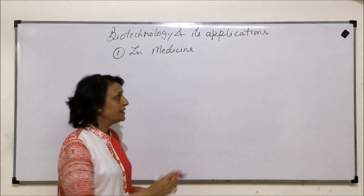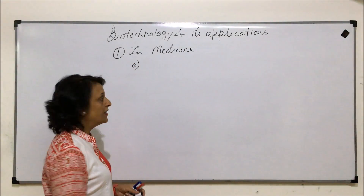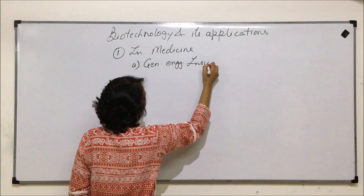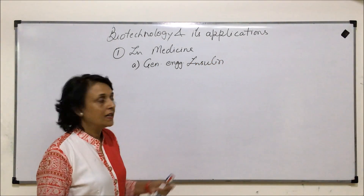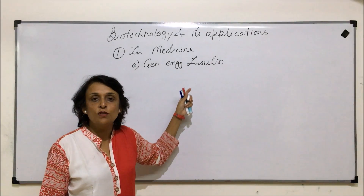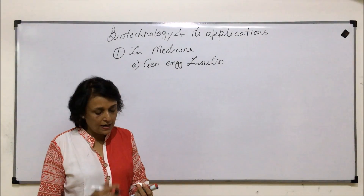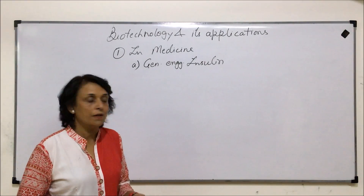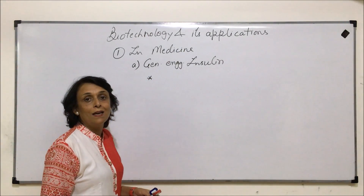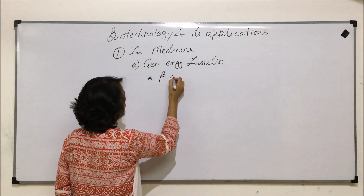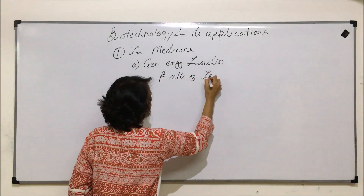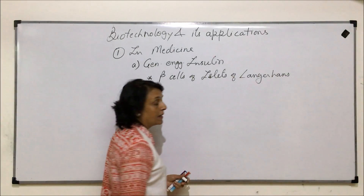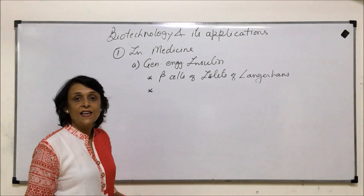When we say applications in medicine, there are many things. First is genetically engineered insulin. Before we talk about the details of how this insulin has been obtained using recombinant DNA technology or genetic engineering, let us first understand the basic structure of normal insulin which is produced in our body. Insulin is produced in beta cells of islets of Langerhans.